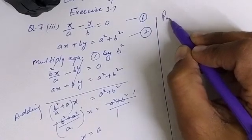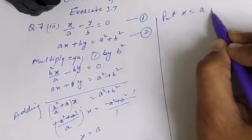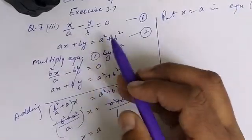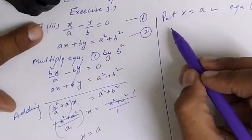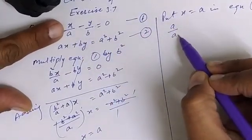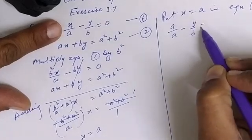So I write here put x is equal to a in equation 1. So put in place of x as a, so it becomes a over a minus y over b is equal to 0.